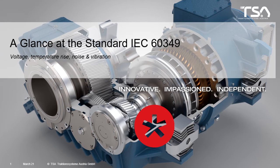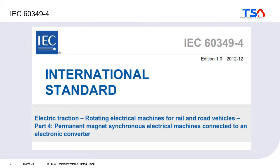In chapter 5 we take a look at the standard 6349. Typically it's not the most entertaining thing to read a standard, but it can give you some hints about what is important when you manufacture or buy an electric machine. This standard is valid for electric traction — for rotating electrical machines for rail and road vehicles — and in particular part 4 is valid for permanent magnet synchronous machines.